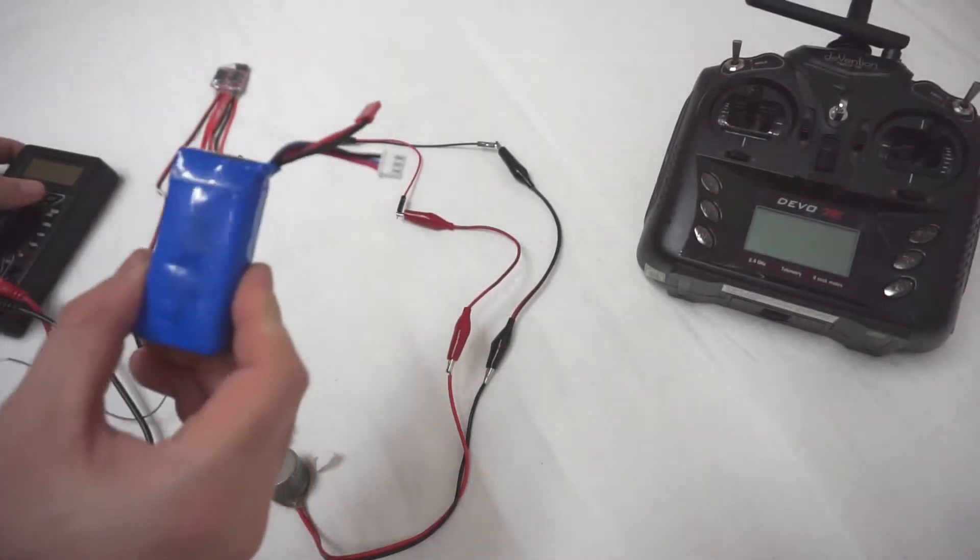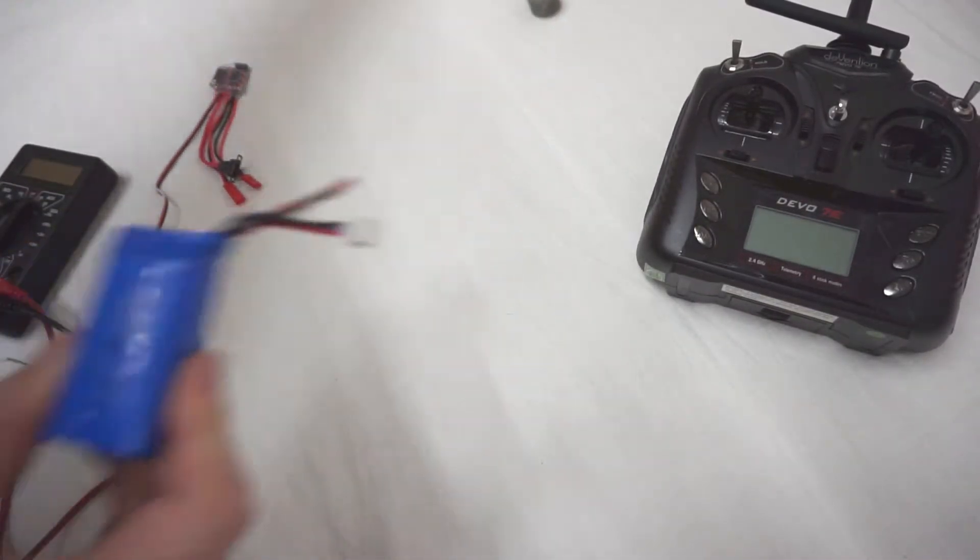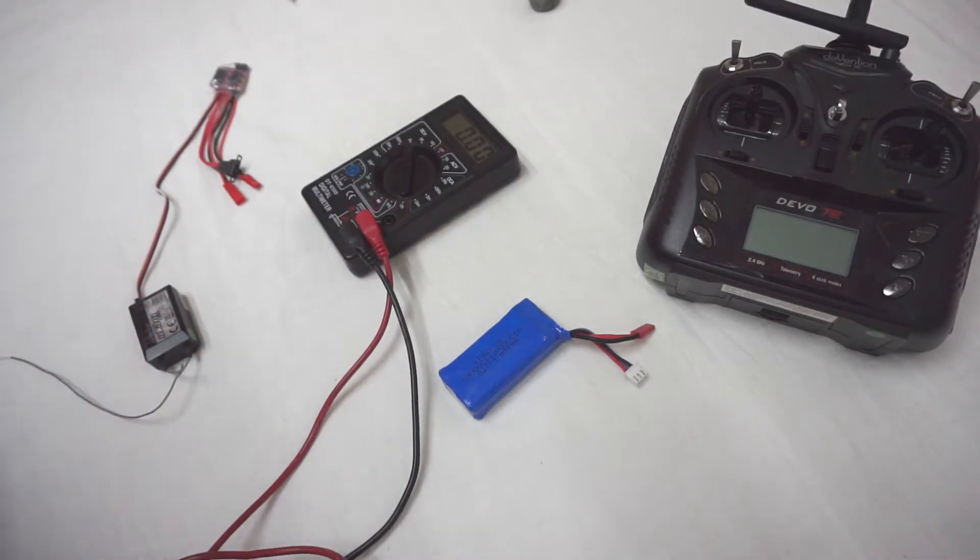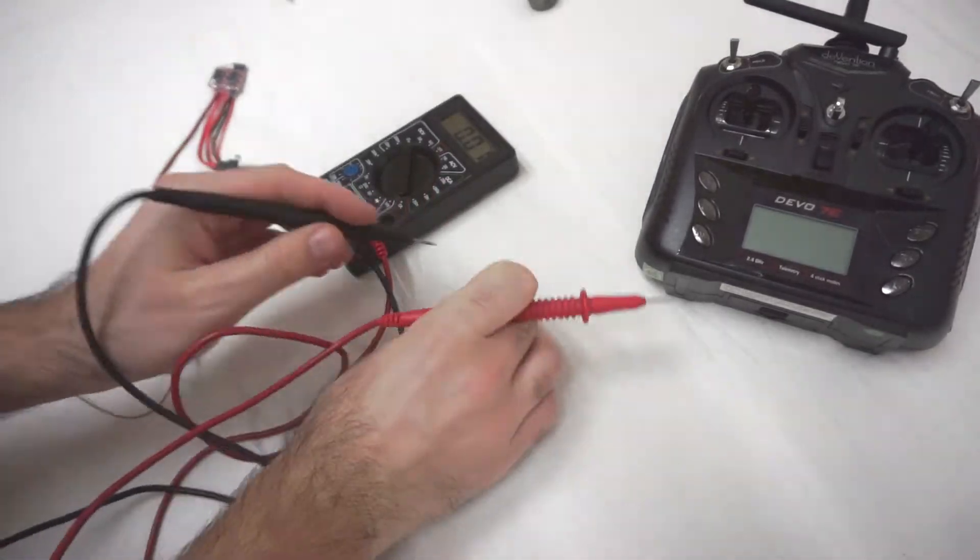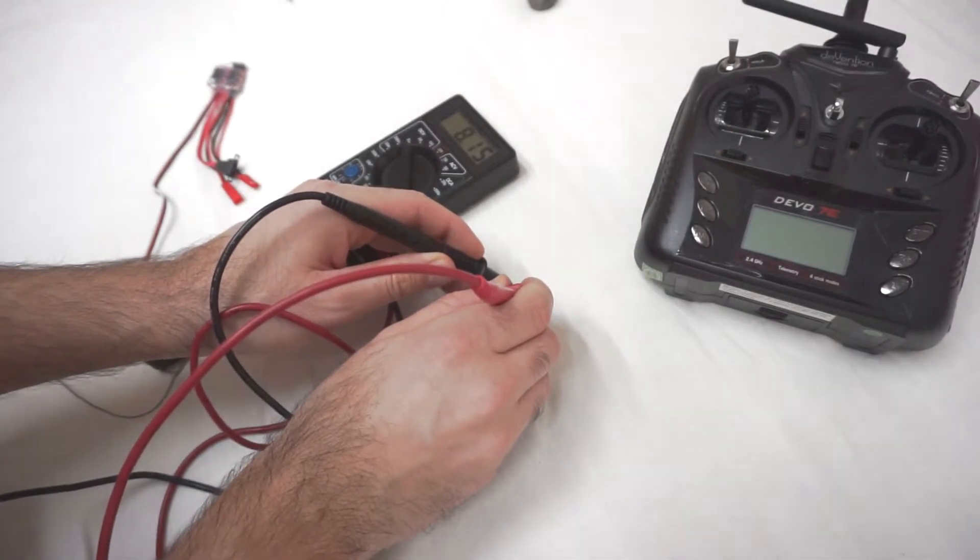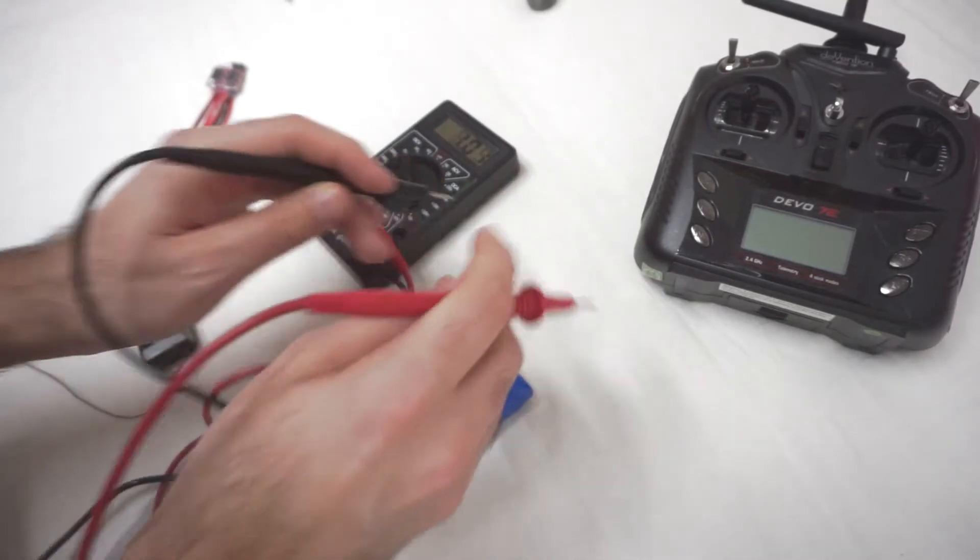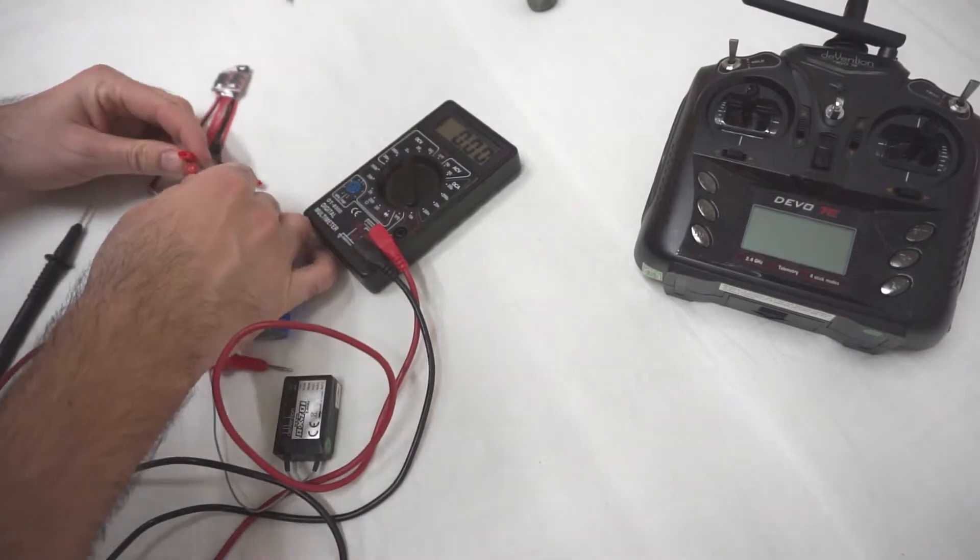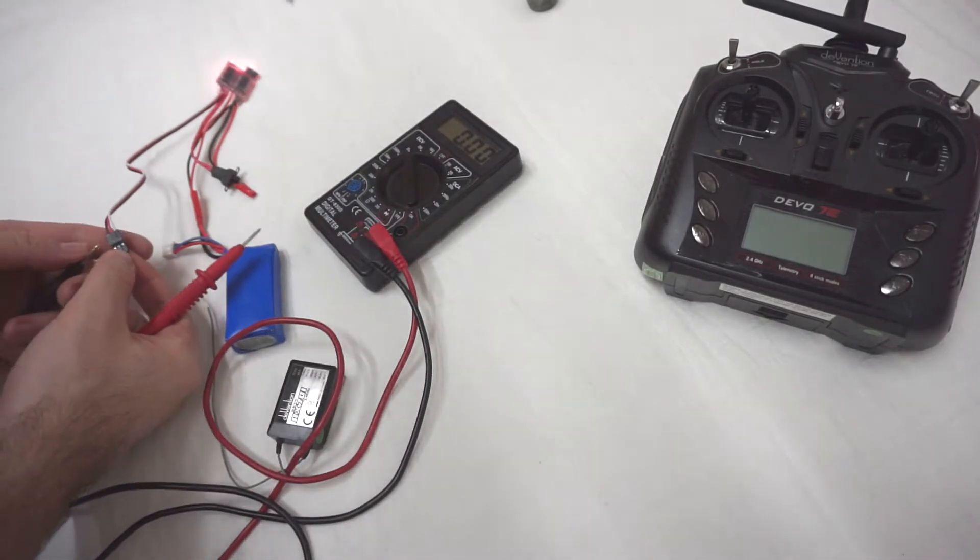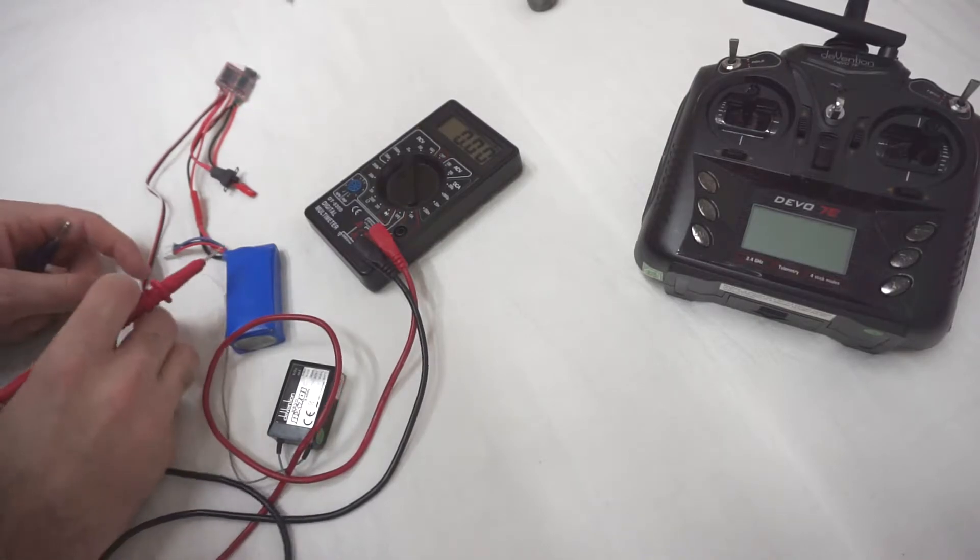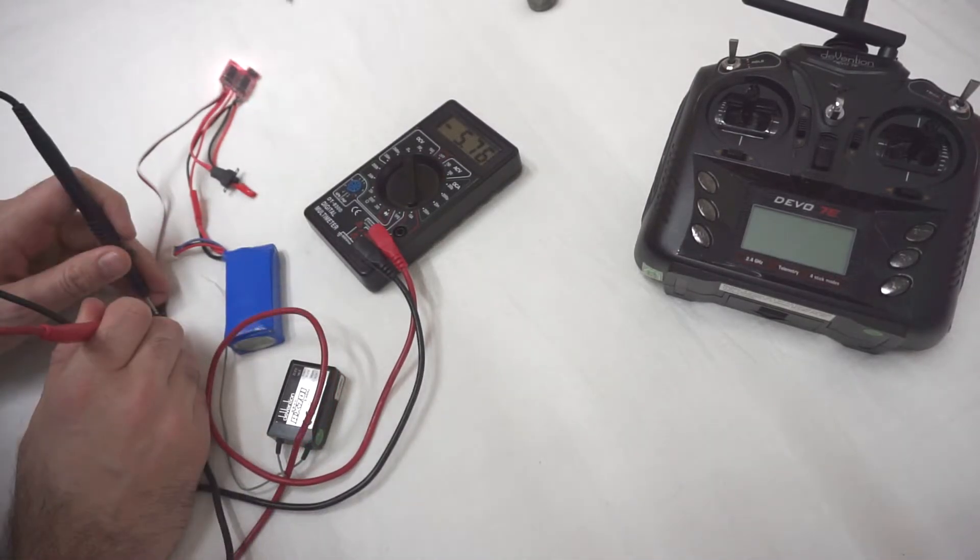Another thing. That's a 7V battery. And here at the receiver we will have only 5V. So let's measure this one. 8.1V. 8.1V from the battery. And when I power it, here at the receiver I will have only around 5V DC. 5.7V.